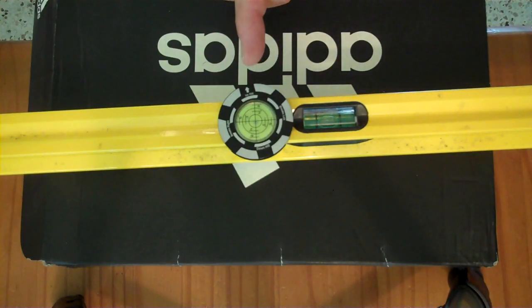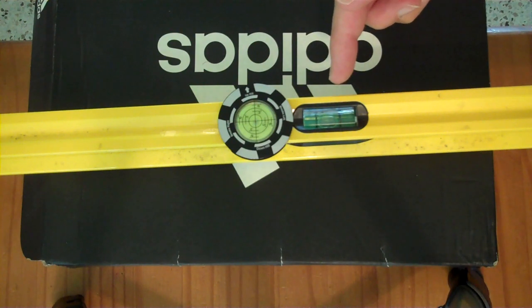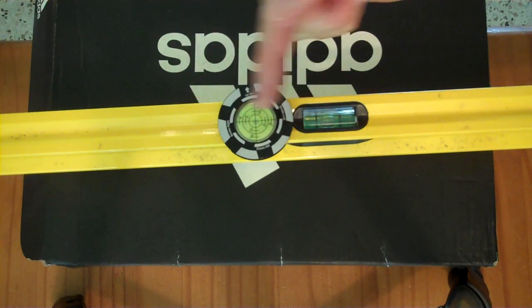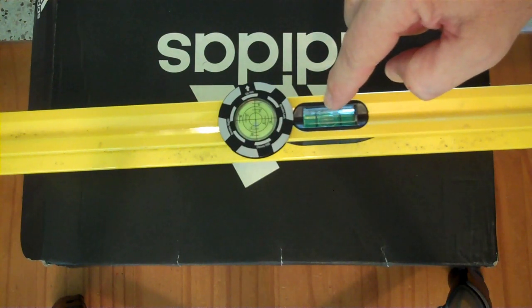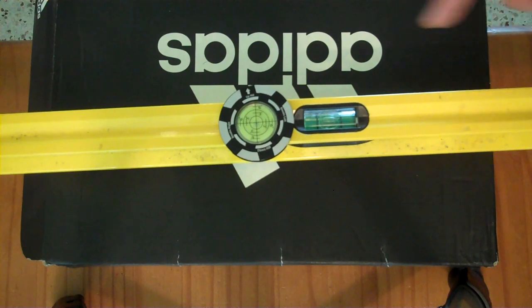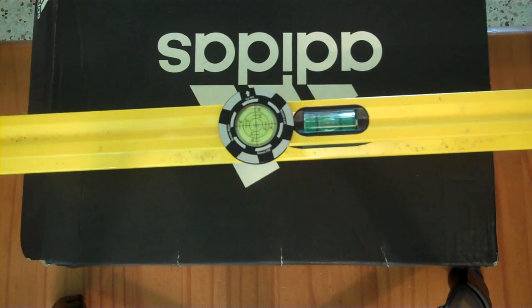Okay, here we are comparing this bubble level to my Stanley framing level. And you can see we're only testing the left-right level right now. This guy is basically level. It's not perfectly between the lines but pretty close. And this guy is right in the center there.